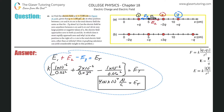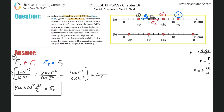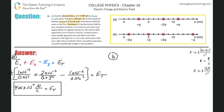Now for letter B: at what position between 3 and 8 centimeters is the total electric field the same as that for negative 2q alone? We need to find a point along that range where the total field equals the field produced by just the second charge.